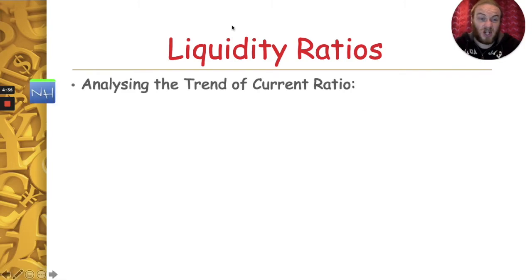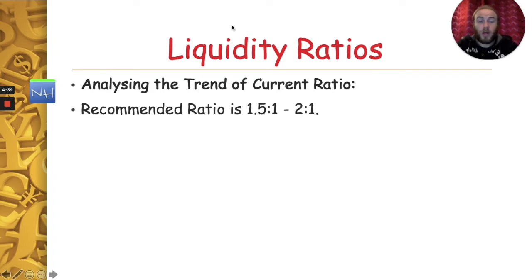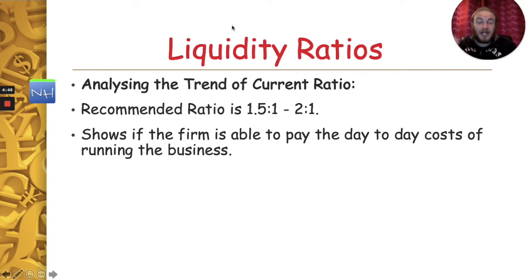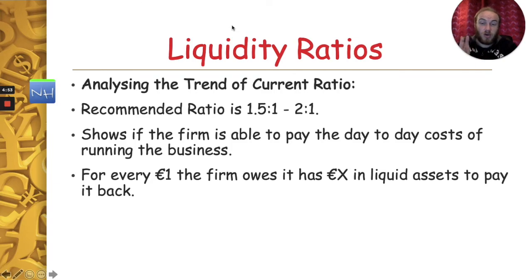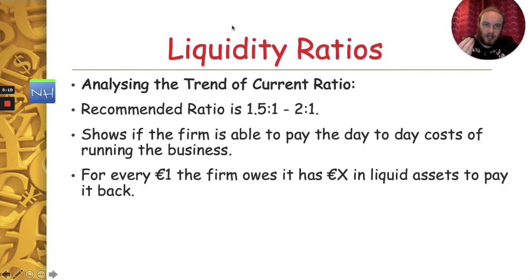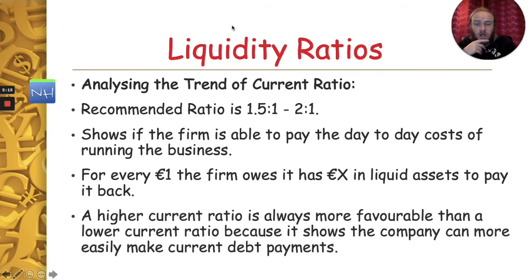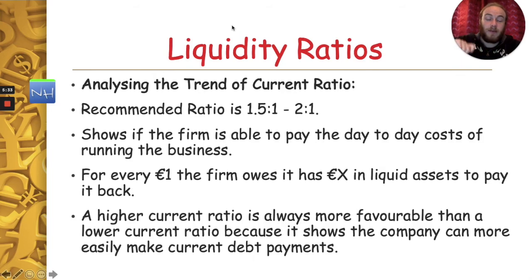So let's analyze what the current ratio means. The recommended ratio is between 1.5 to 1 and 2 to 1, though different textbooks may differ slightly. This shows the firm is able to pay its day-to-day cost of running the business. In plain English, for every euro the firm owes, it has X amount of euro in liquid assets to pay it back. In our example it was 2.5 to 1, meaning for every euro owed the firm had €2.50 in liquid assets. A higher current ratio is always more favorable as it shows the company can more easily pay current debt. However, if it gets too big - over the recommended ratio - the business should consider investing some of its liquid assets to get a better return.